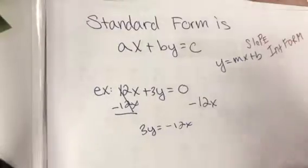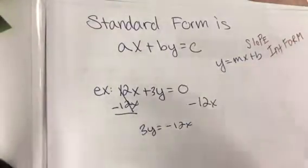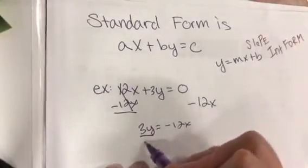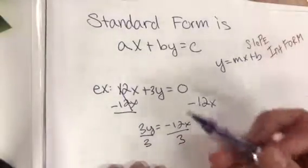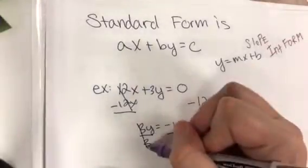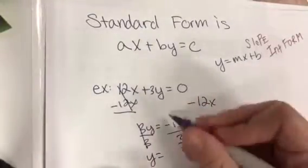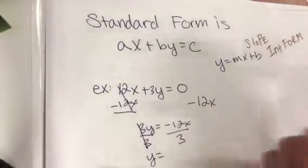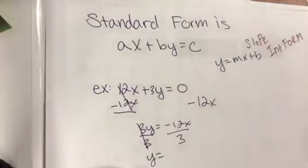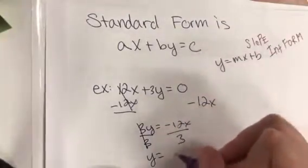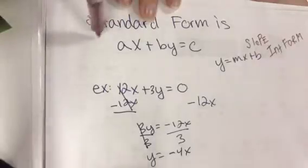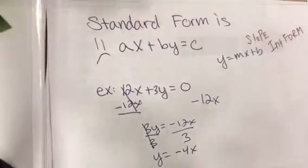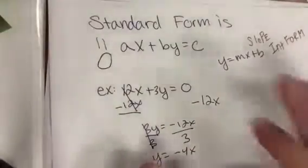Now what we're going to do is we're going to divide by three on both sides. Why don't I just subtract it? Because that's a multiplication and the inverse of multiplication is division. That cancels out to one. Y equals negative 12x divided by 3. So y equals negative 4x. You could make it plus zero if you want.